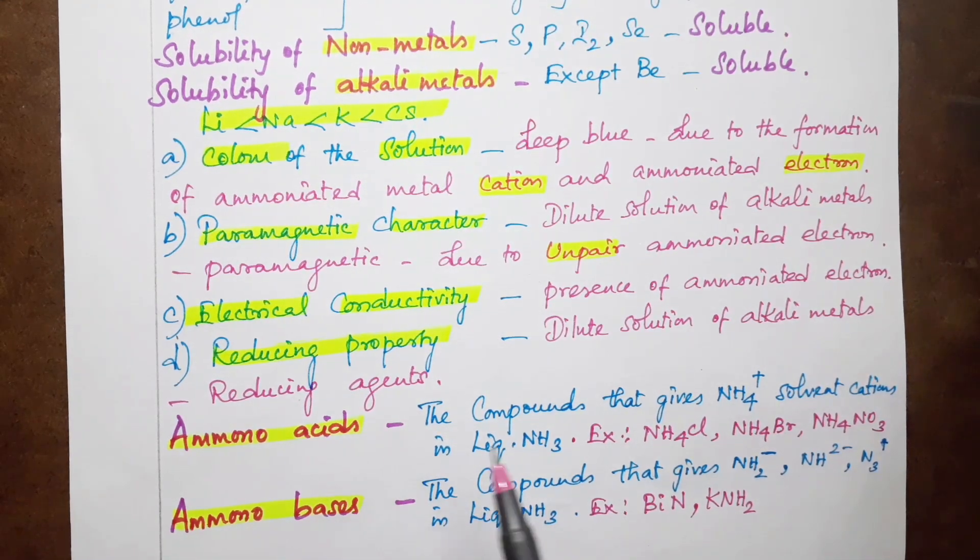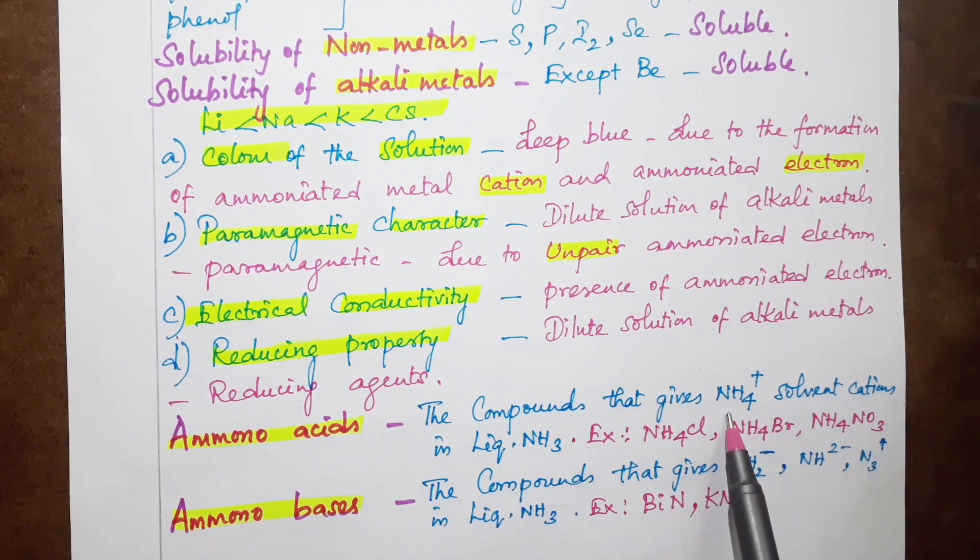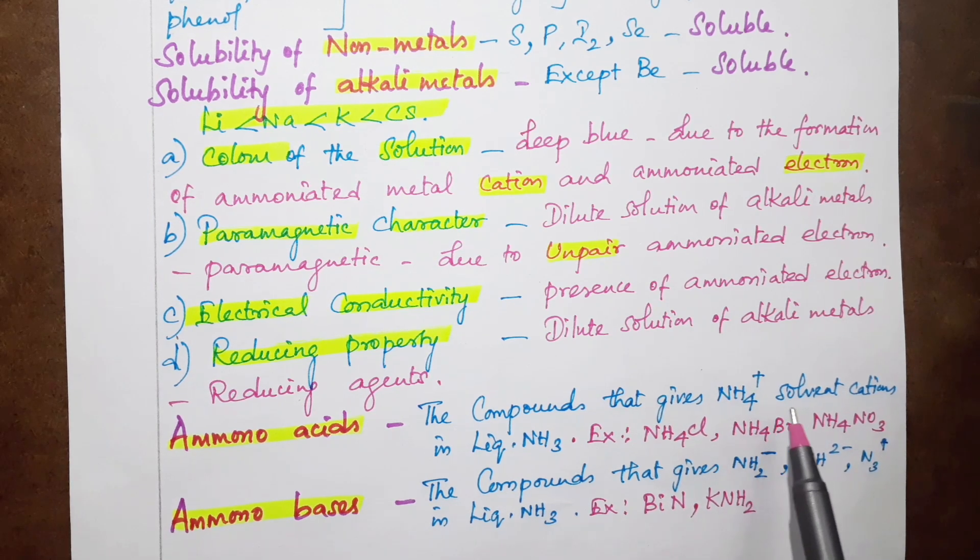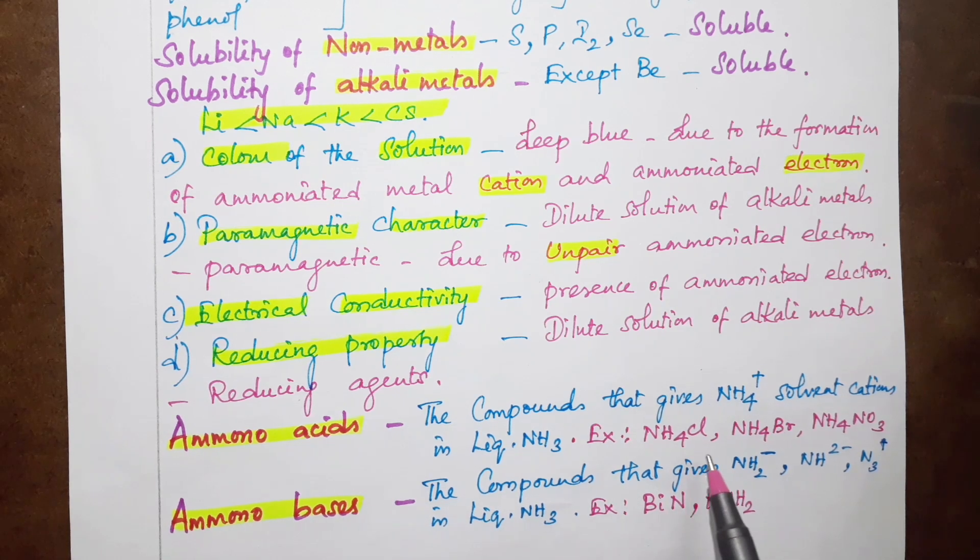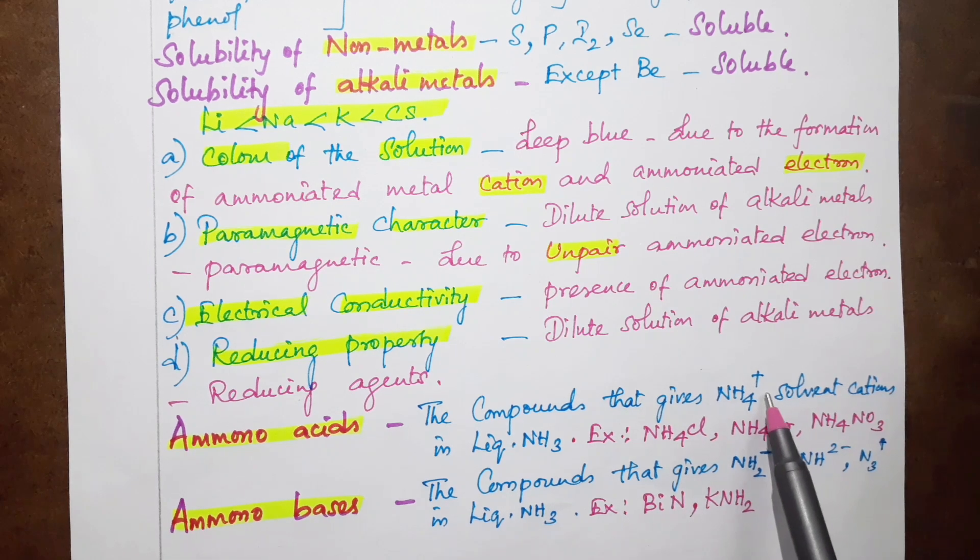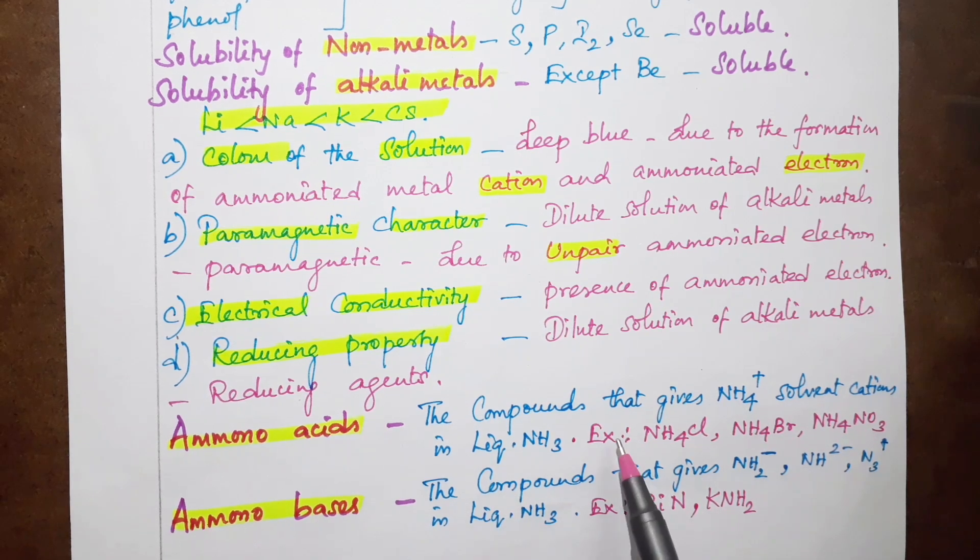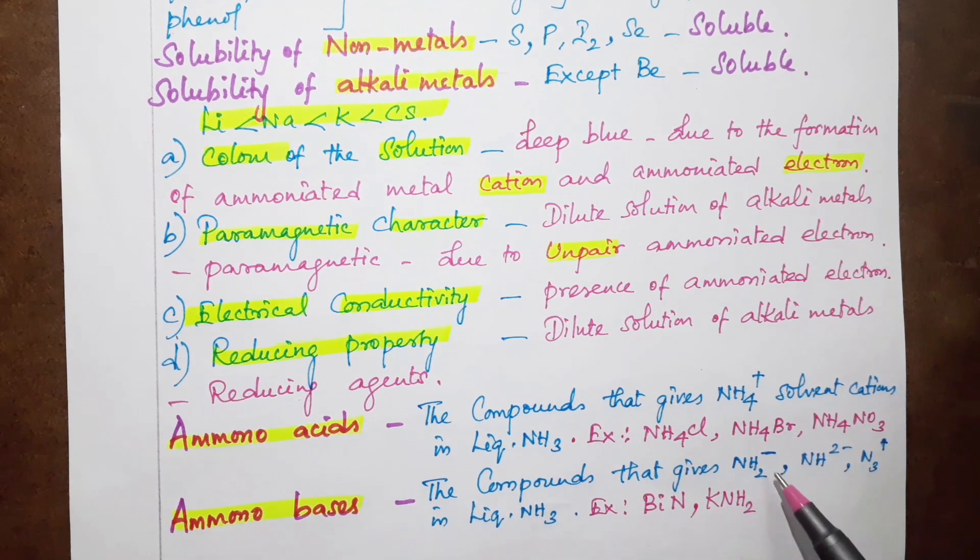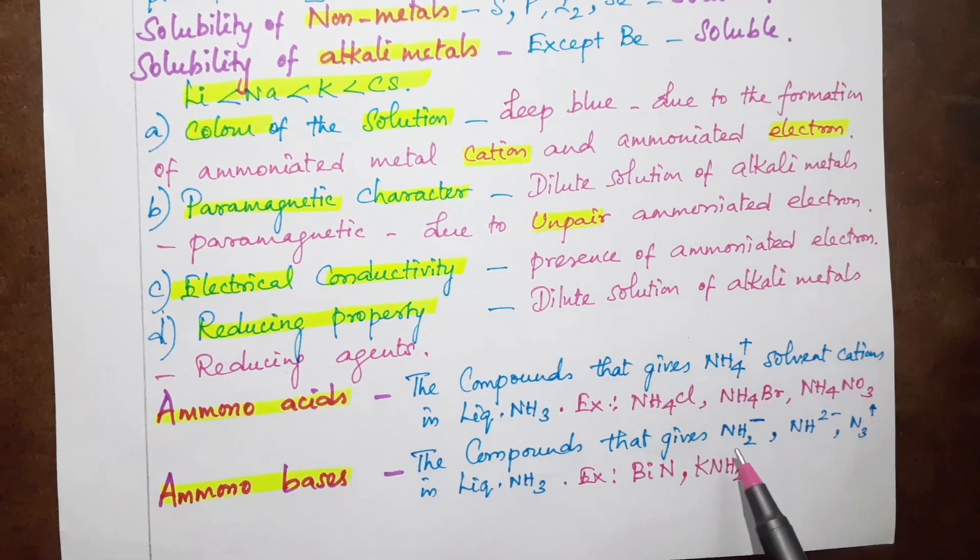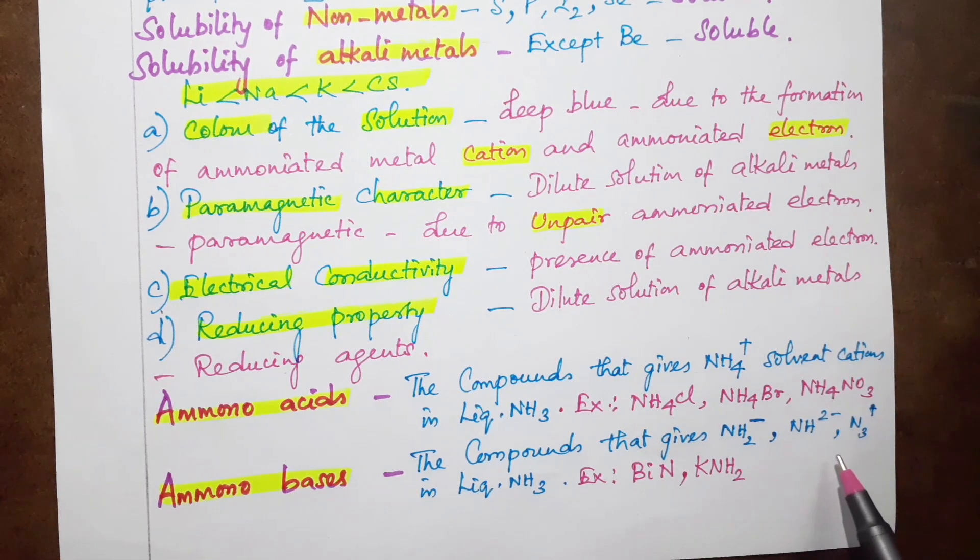Ammono acids. In liquid ammonia, NH4 ion will be used as a solvent. For example, ammonium chloride, ammonium bromide, and ammonium nitrate. In this case, NH4 ion is used as ammono acid. A compound with NH2 amino group, amine group, or amide group where nitrogen is present are ammono bases.